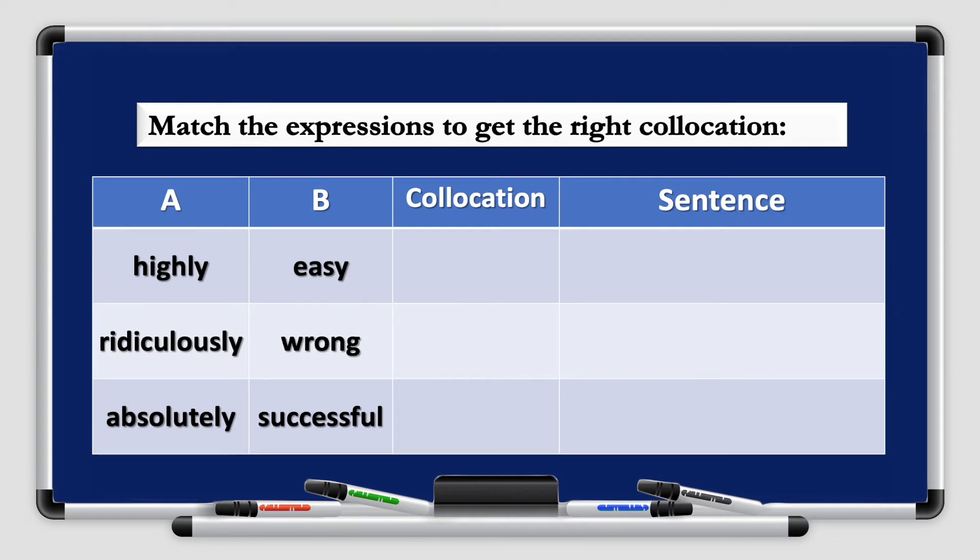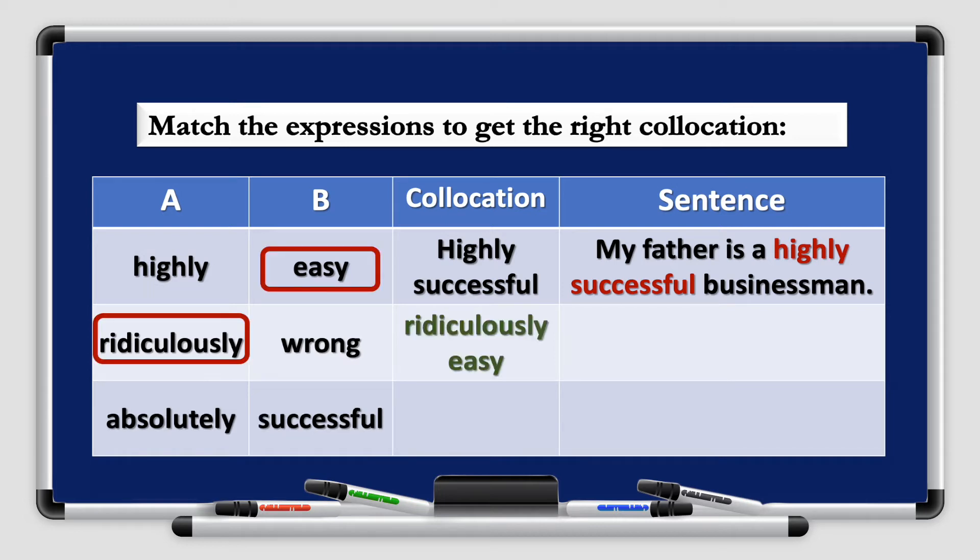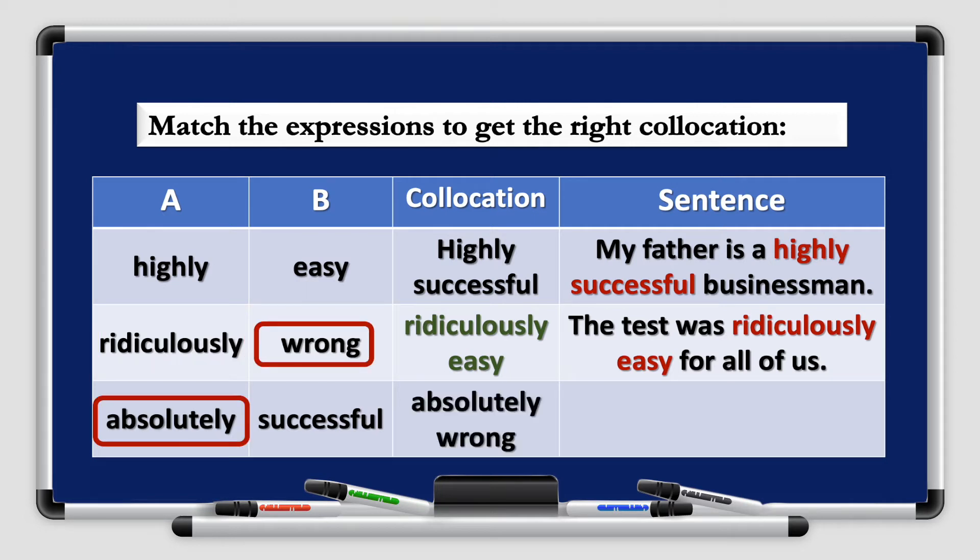Let's look at some more examples. Again, column A and column B. We're going to match them and write some sentences. We have highly, ridiculously and absolutely for our adverbs. Highly easy, highly wrong or highly successful. Think of something as in high, in rank or position. So it is highly successful. An example sentence would be, my father is a highly successful businessman. What about ridiculously? Ridiculously easy or ridiculously wrong? If something is very easy, ridiculously easy. Excellent. The test was ridiculously easy for all of us. And finally, we have absolutely wrong. It's absolutely wrong to share rumors.